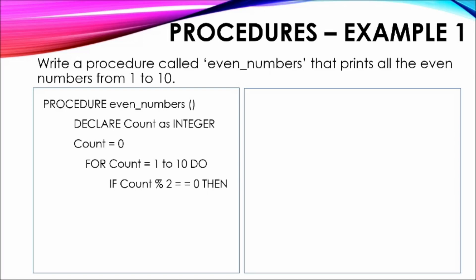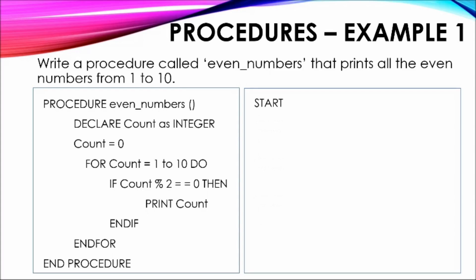Therefore, if count divided by two produces a remainder of zero, this will indicate an even number. If this expression evaluates to true, the value stored within count will be displayed. This process will be evaluated for each iteration of the loop, with each occurrence of an even number being displayed. The loop terminates after ten executions. The procedure will then be terminated with the keyword END PROCEDURE.